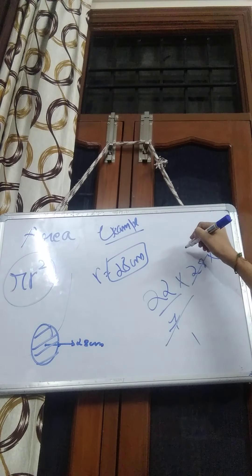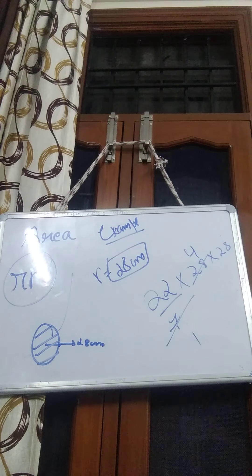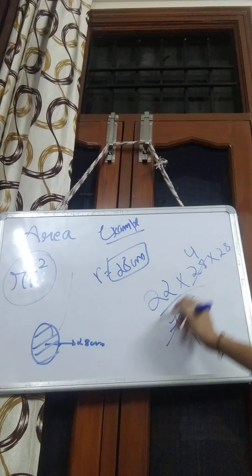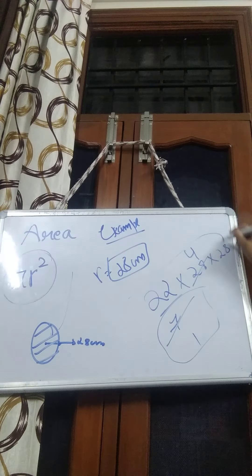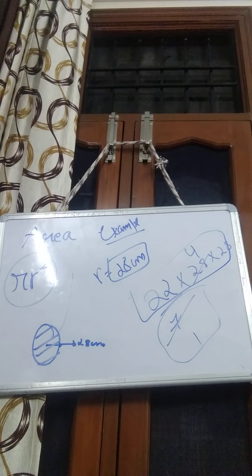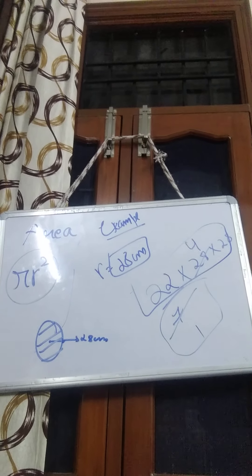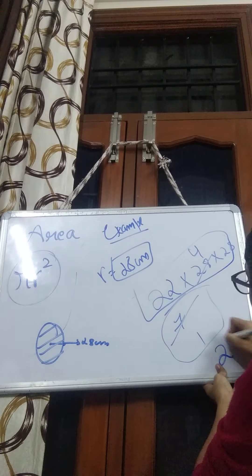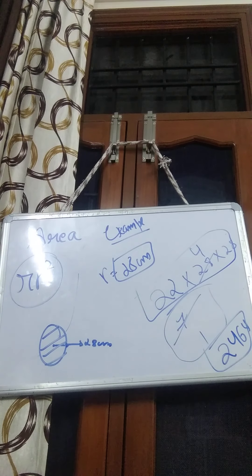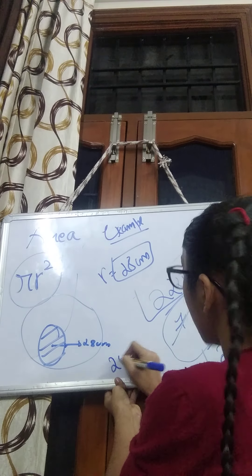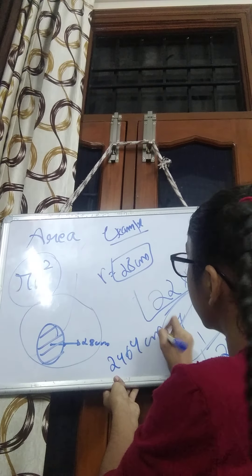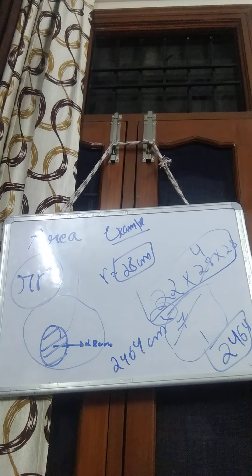We cancel 7 and 28 to get 4, so the denominator becomes 1. We then multiply 22 × 4 × 28, which gives 2464. So the area of this circle is 2464 centimeters squared. Don't forget to write the square unit because this is an area.